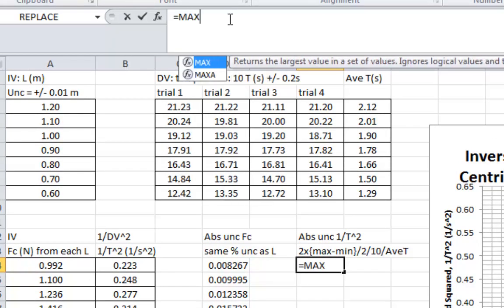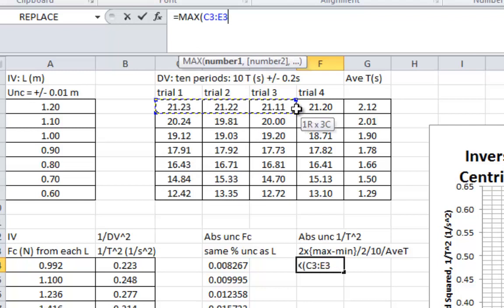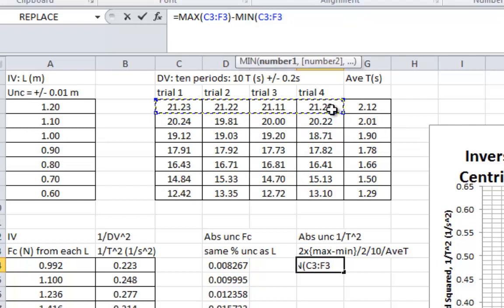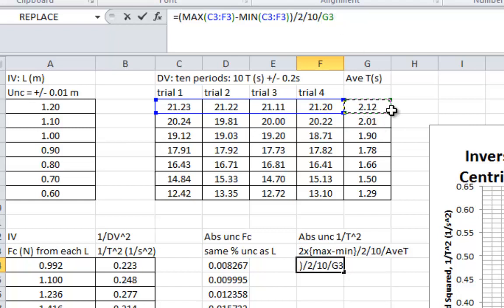We take the maximum of the first set of values. We subtract the minimum of the same set of values. We put in some separate brackets so that we can take half of that range. Then we divide by 10,